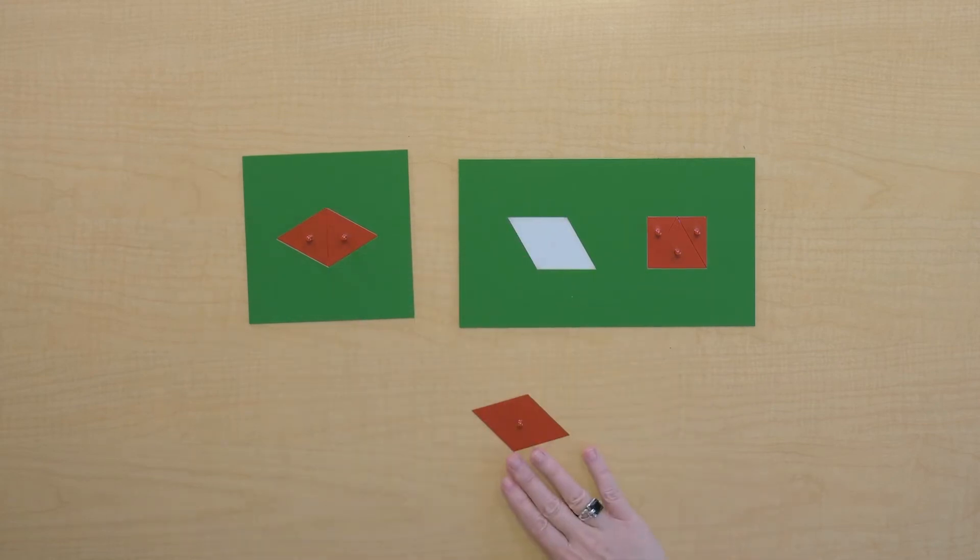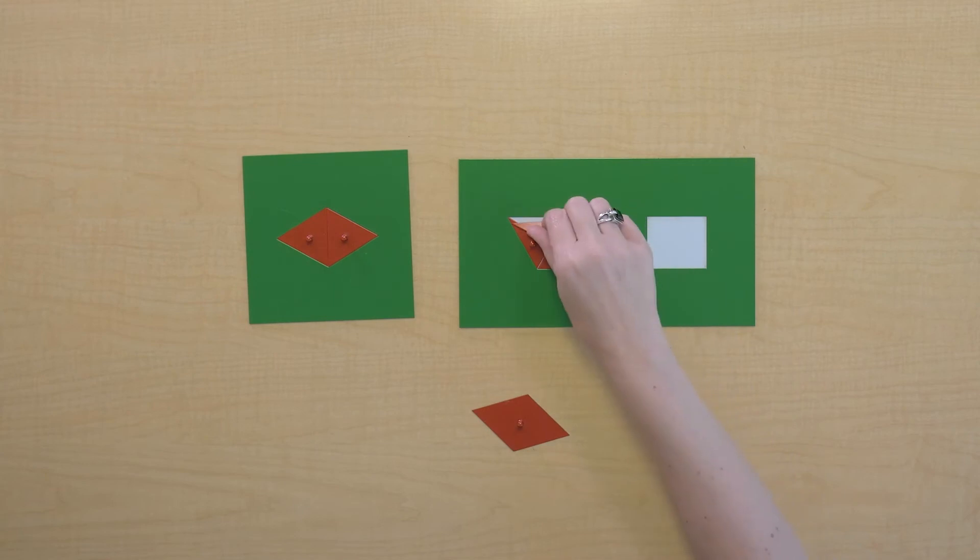Now, let's see if our rhombus and our rectangle are equivalent. Well, those pieces from the rectangle took up the space of the rhombus, which means they are equivalent.